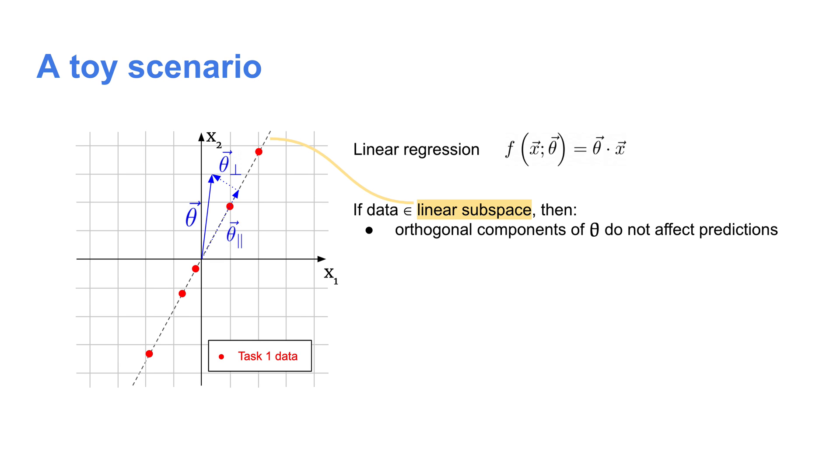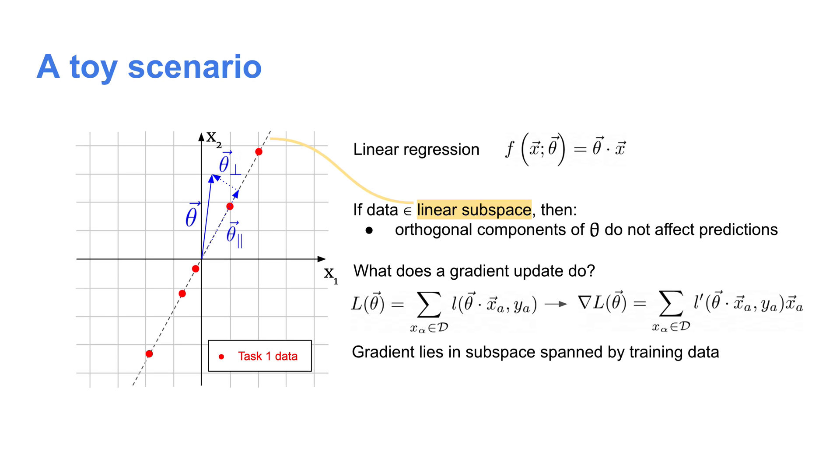The orthogonal components just don't affect the model predictions at all. Second, as a consequence of this fact, the gradient of the loss function with respect to theta also lies in the subspace spanned by the training data, which means that the orthogonal component doesn't change at all during gradient descent training.